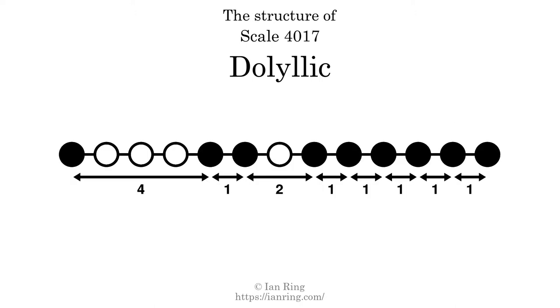The structure of a scale is a description of the interval distance between each successive tone. This scale has a structure of 4, 1, 2, 1, 1, 1, 1, 1.